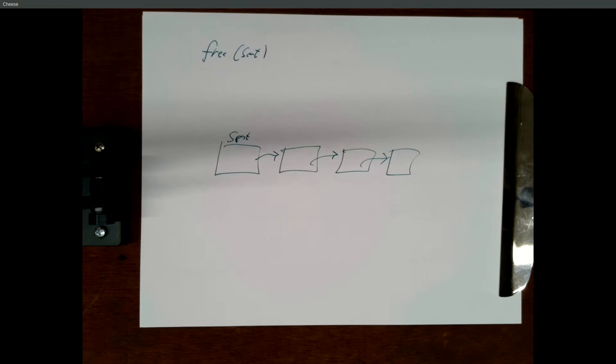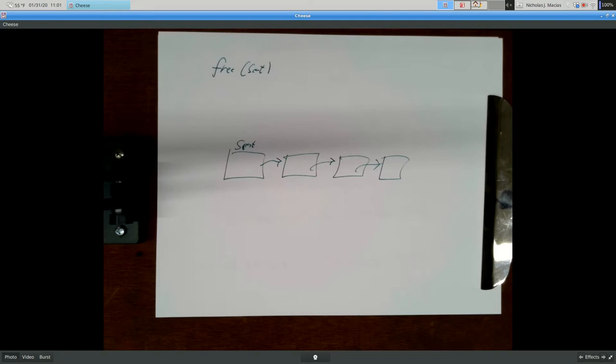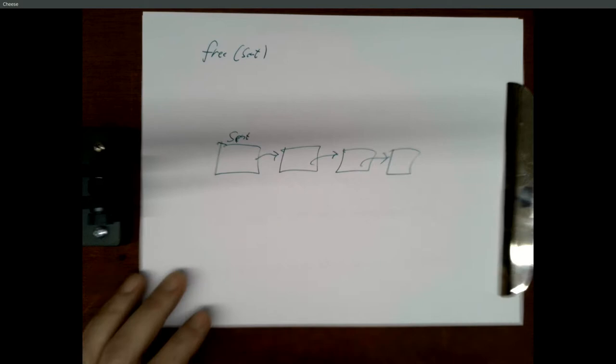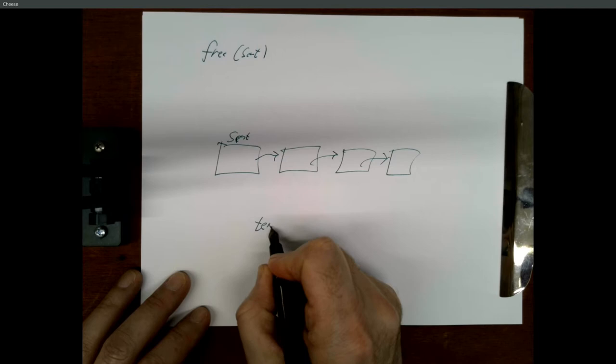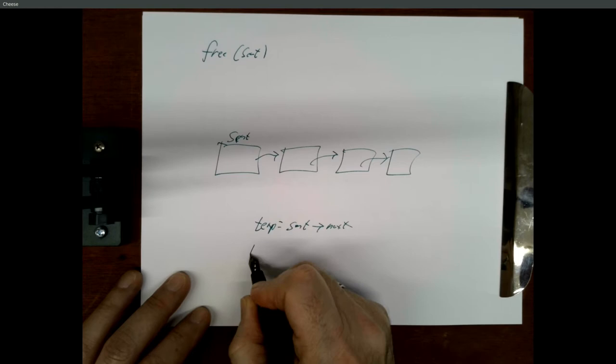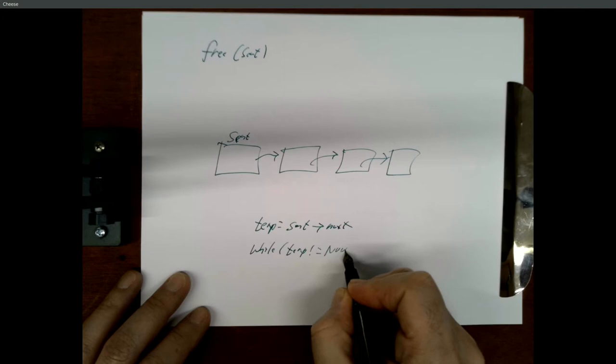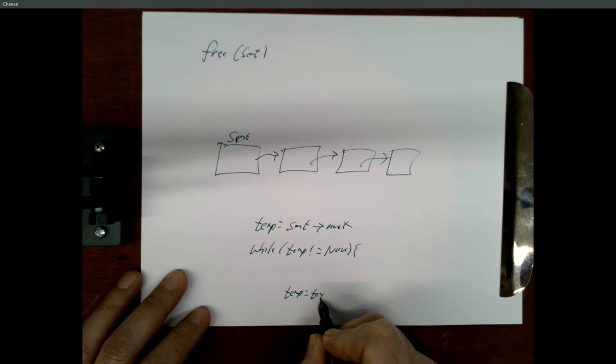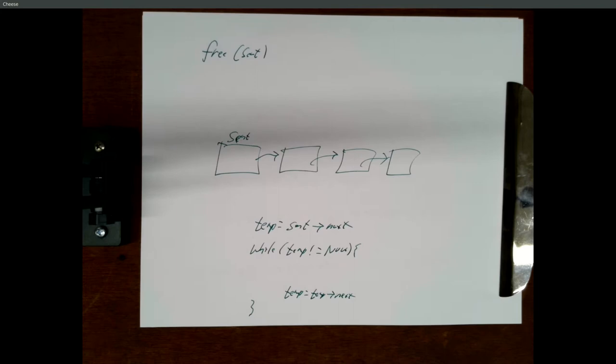So we've got a linked list and we want to free all the memory associated with that. We've got a free function, we're going to pass it the sentinel node, which is the address of the sentinel — a pointer to this first block. So how do we traverse a list? We typically do something like this: temp equals sentinel next. While temp is not null, do some stuff and then move down the list. And when we exit the loop, we know that we've done whatever we're doing to this last block.